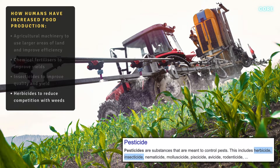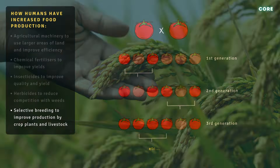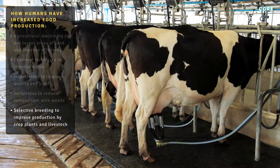Note that both insecticides and herbicides are sometimes referred to as pesticides. Number five, selective breeding, also known as artificial selection, involves choosing and breeding plants or animals with desirable characteristics to improve production. It's been used to enhance traits like yield, disease resistance, drought tolerance and flavor in crop plants, and meat quality, milk production and disease resistance in livestock.